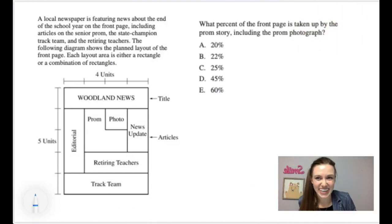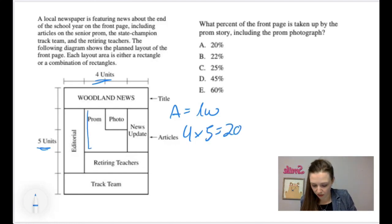A local newspaper is featuring news about the end of the school year on the front page, including articles on the senior prom, the state champion track team, and the retiring teachers. The following diagram shows the planned layout of the front page. Each layout area is either a rectangle or a combination of rectangles. What percent of the front page is taken by the prom story, including the prom photograph? So the first thing we have to do is we have to figure out the area of the entire page, and then we have to figure out the area of the prom page, the prom and the photo, and then just do a little division.